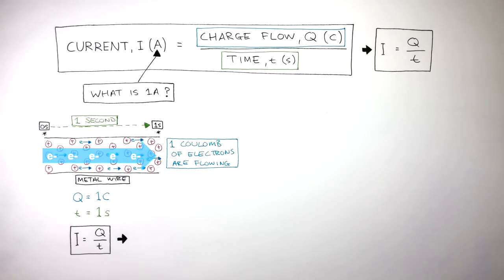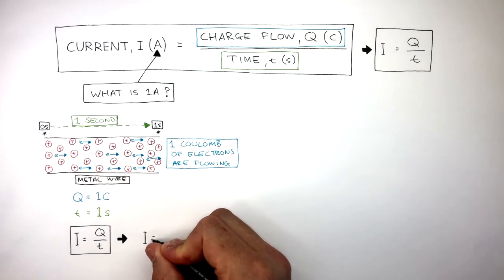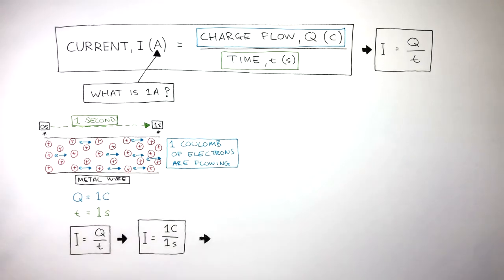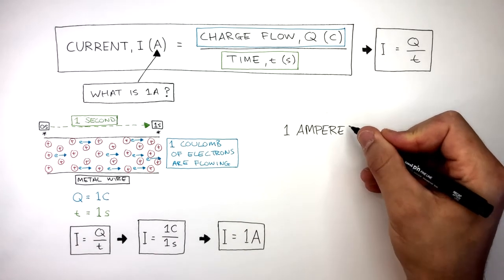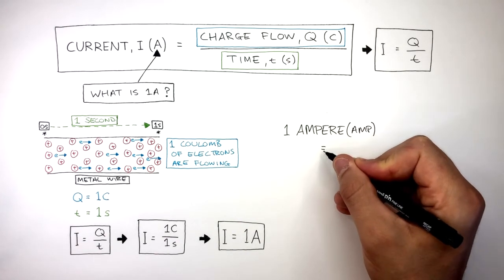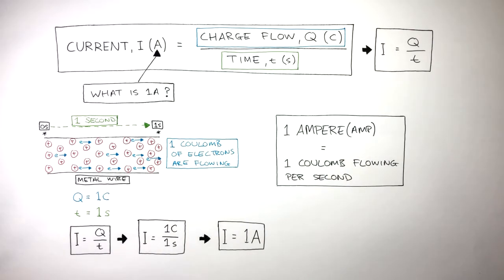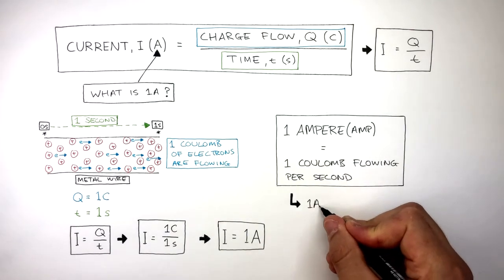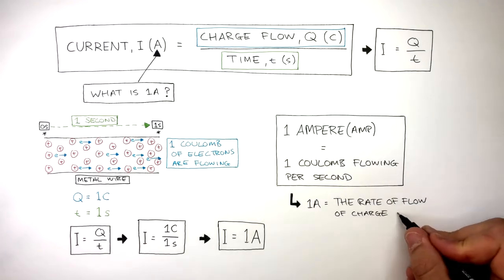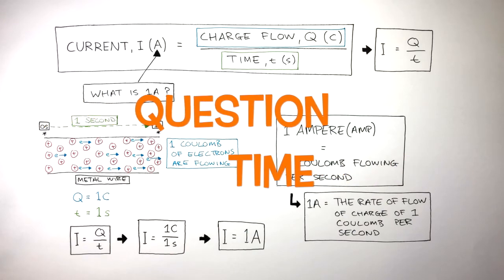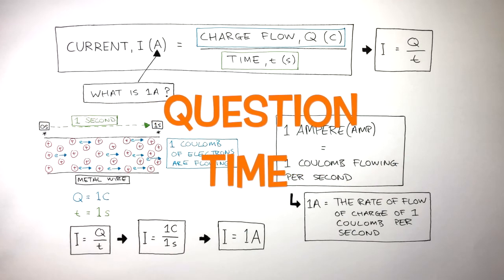To calculate the current when 1 Coulomb of electrons are flowing in 1 second, we write I equals 1 Coulomb divided by 1 second. I equals 1 Amp. Therefore, 1 Ampere or Amp is equal to 1 Coulomb flowing per second. Another way of saying 1 Amp is the rate of flow of charge of 1 Coulomb per second.